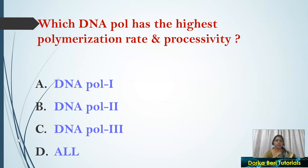Next question: Which DNA polymerase has the highest polymerization rate as well as processivity? Options: DNA Pol 1, DNA Pol 2, DNA Pol 3, or all. The answer is DNA Polymerase 3 — it has high processivity and a high polymerization rate compared to DNA Pol 1 and Pol 2.